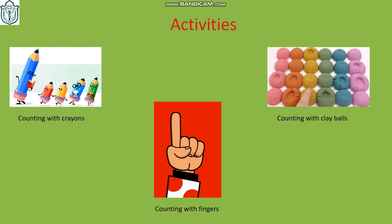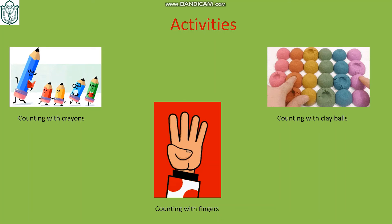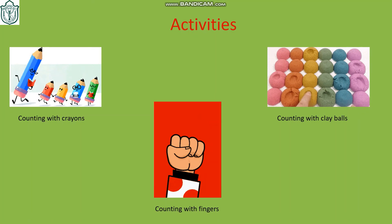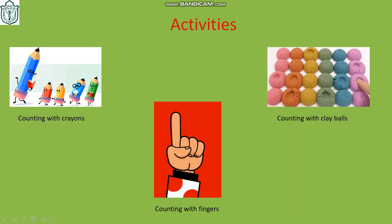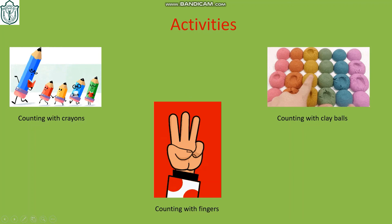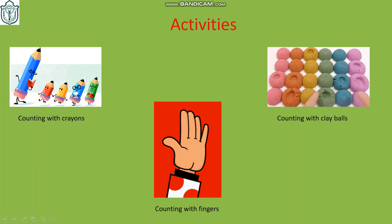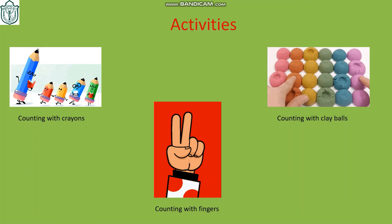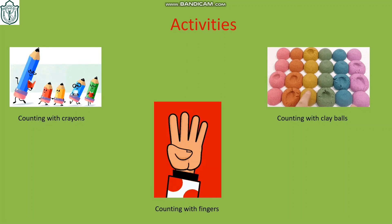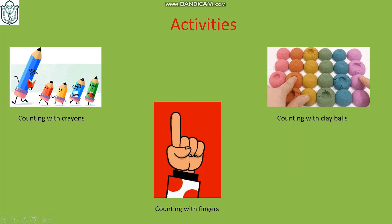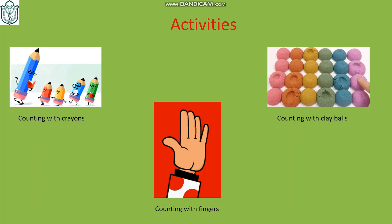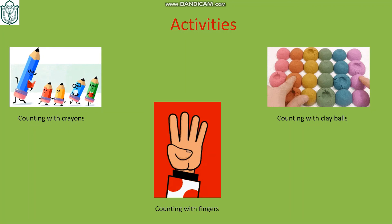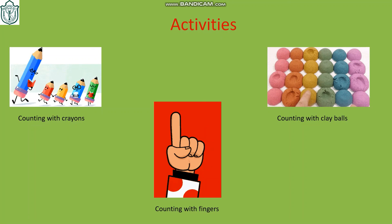After the oral introduction, children will do two activities related to oral numbers. First they will count crayons: one, two, three, four, five. Then they will make clay balls and count them: one, two, three, four, five. Finally they will learn how to count with their fingers: one, two, three, four, five. With this, the learning of oral numbers is done. Thank you children, bye!